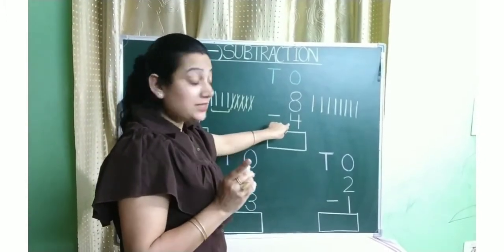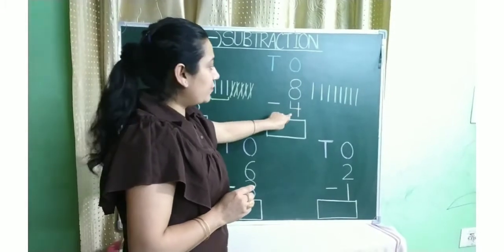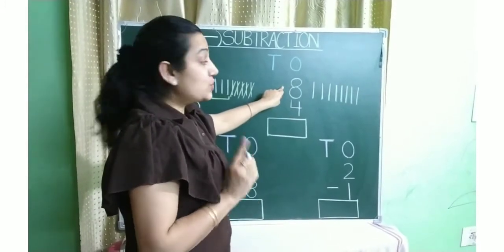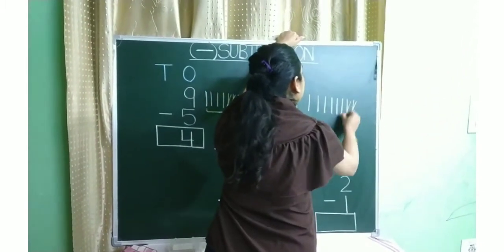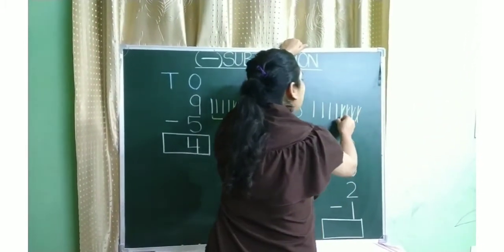This is number 4. It means we have to separate number 4 from number 8. So we will cut 4 lines. 1, 2, 3, 4.